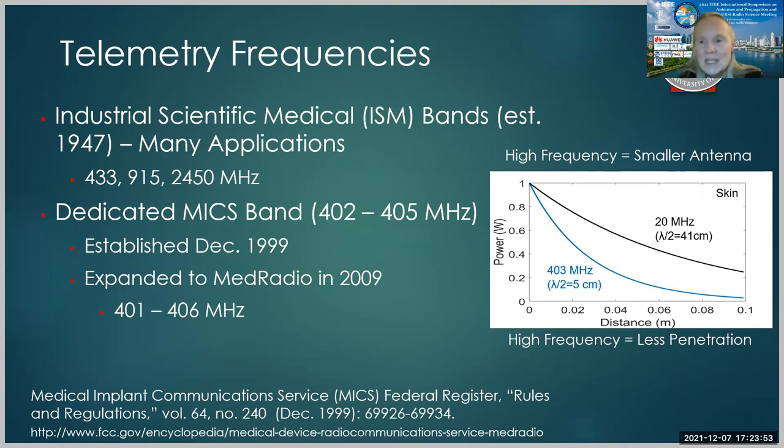So the frequencies that are feasible for this application are either the industrial, scientific, medical bands, 433, 915, or 2450 megahertz, or the dedicated MICS medical implant communication services band from 402 to 405 megahertz. This was established in 1999 and expanded to the med radio band in 2009, so 401 to 406 megahertz. So you're going to hear me talking about these two bands and the 433 megahertz that's close by.